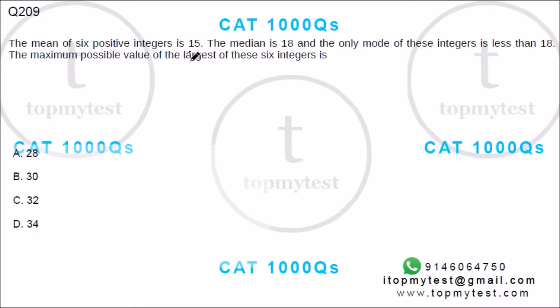The mean of 6 positive integers is 15. So 6 numbers, mean is 15. If mean is 15, so total will be 15 into 6, which is 90. Median is 18.